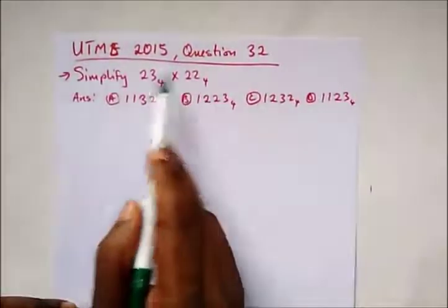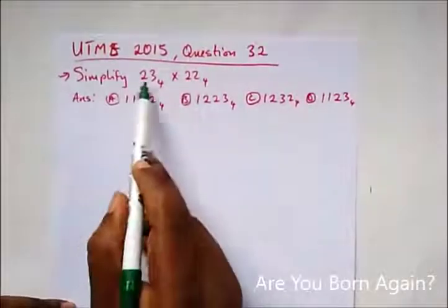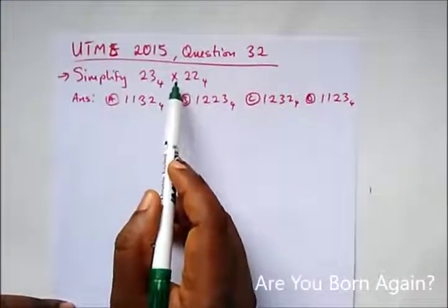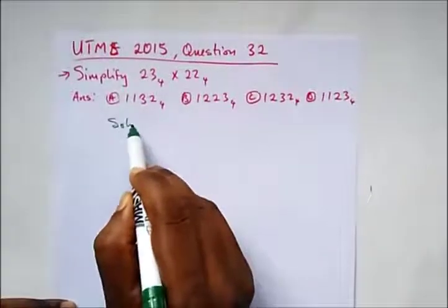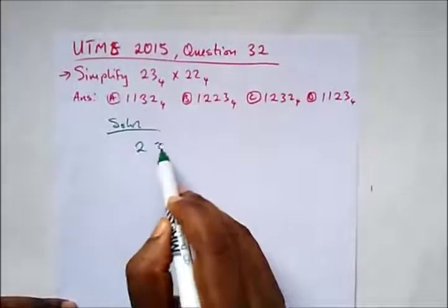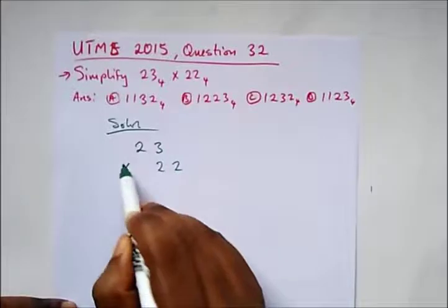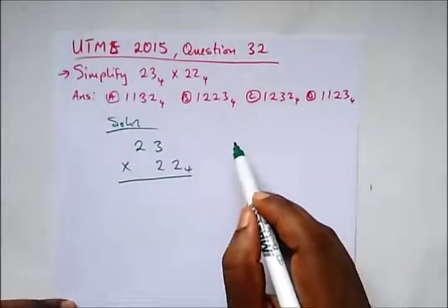Here we have a question from UTME 2015, it's a multiplication operation on number bases. It says simplify 23 base 4 and multiply by 22 base 4. So what do we have?